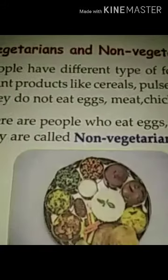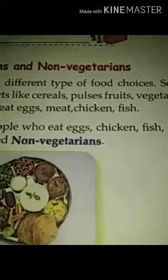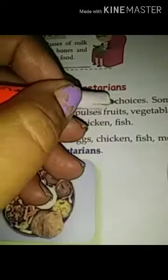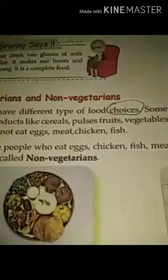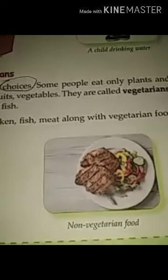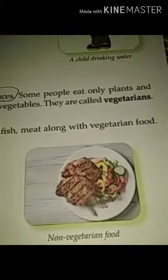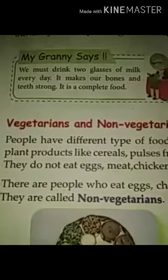People have different types of food choices. That means they like different kinds of food. Some people eat only plants and plant products, like cereals.